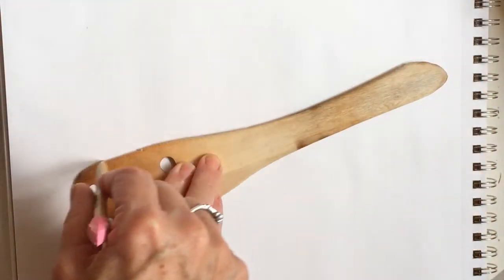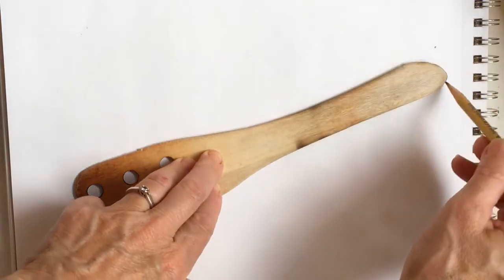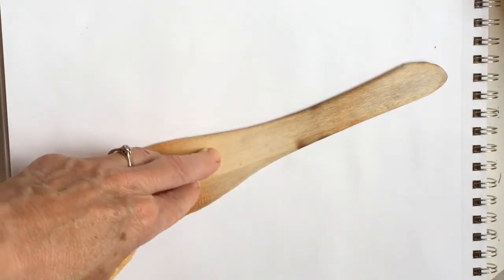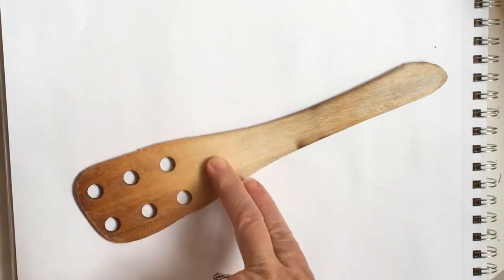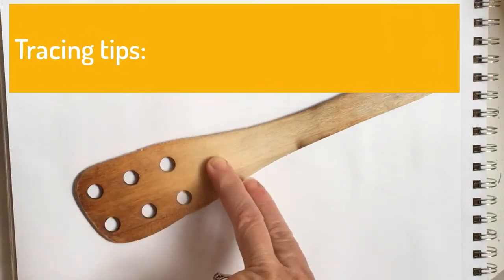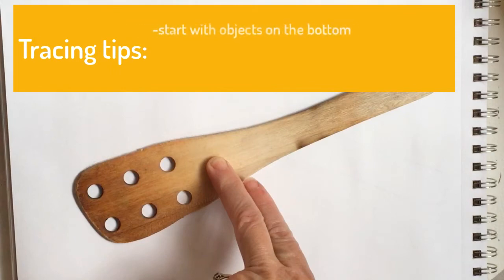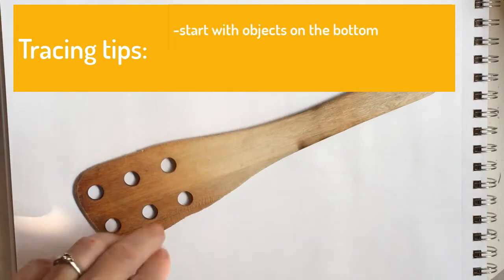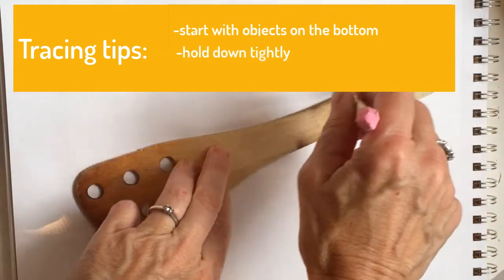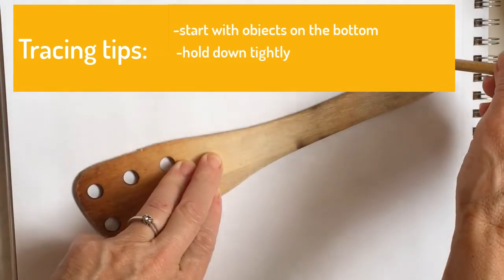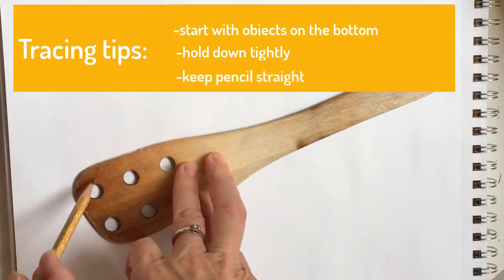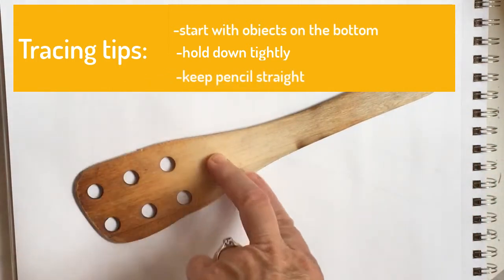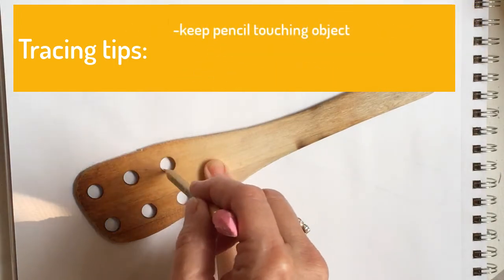Now we want to draw our objects, placing them in the same position the way we did when we laid them out on the table. Remember we are overlapping so I'm going to start with the object that was on the very bottom of my composition and that was the wood spoon. Tracing is a great way to draw your objects. Hold the item down tightly so it does not move. Keep your pencil straight up and down and draw around the object. Make sure the pencil always touches the object as you trace it.